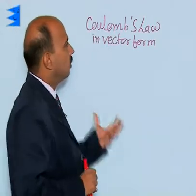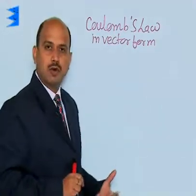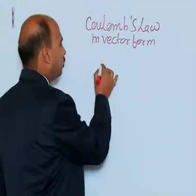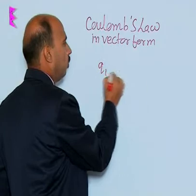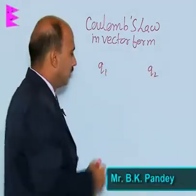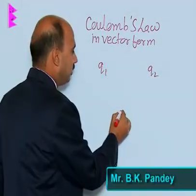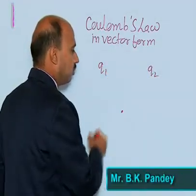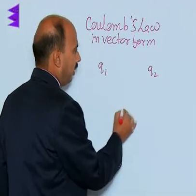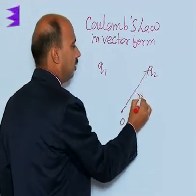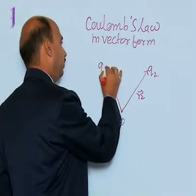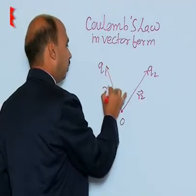Now, say Coulomb's law in vector form. Suppose there are two charges Q1 and Q2 over here, there is an origin in the XY plane. Its position vector is R2 and its position vector is R1.